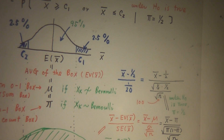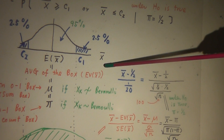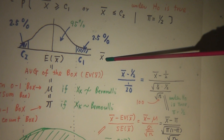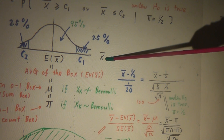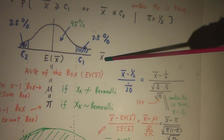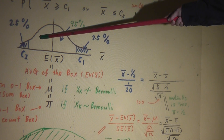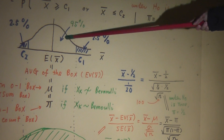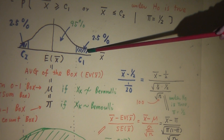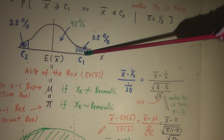Now look at the picture. When sample size is 100, the sample size is large enough to guarantee the central limit theorem works. So I draw the normal curve — approximately normal.